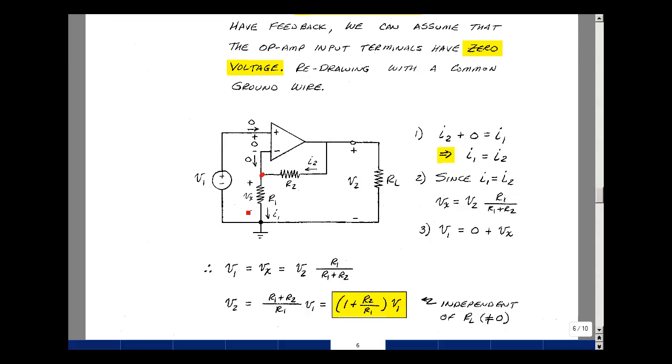Now what's the voltage V sub X in terms of the input? Well, let's just do Kirchhoff's voltage law around this loop. The rise in voltage is V1. The drop is zero. The drop is V sub X. V1 equals V sub X.